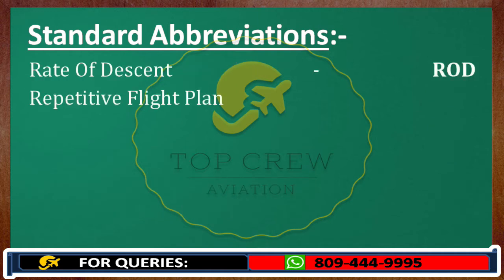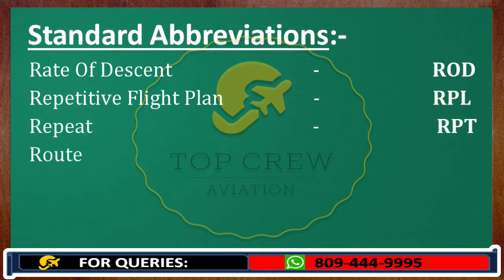Repetitive flight plan: RPL. Repeat: RPT. Route: RTE.